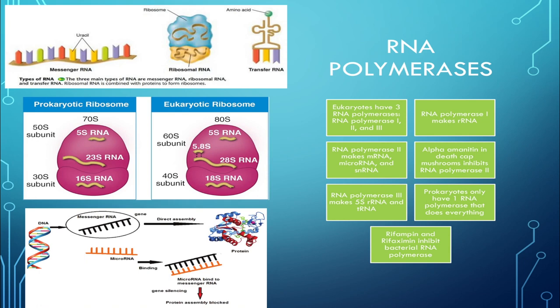It's important to note that with all these RNA polymerases there is no proofreading function, so transcription is more likely to result in errors than DNA replication by DNA polymerase, which does have proofreading. RNA polymerase does not have proofreading while DNA polymerase does.